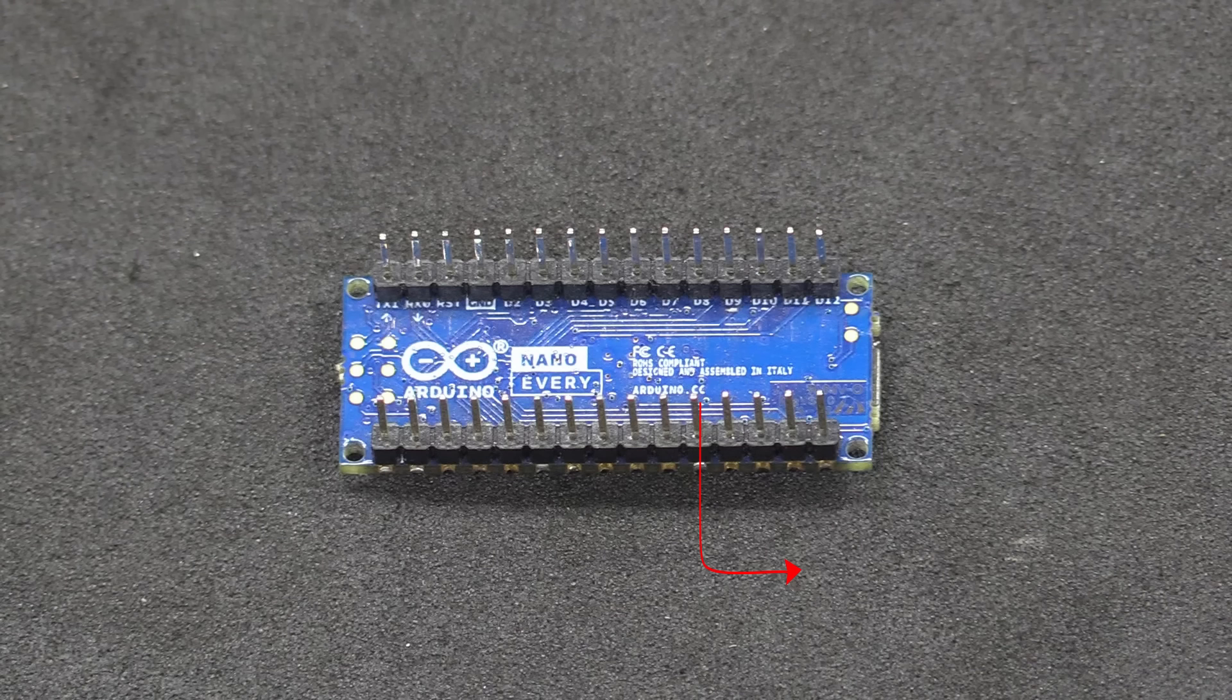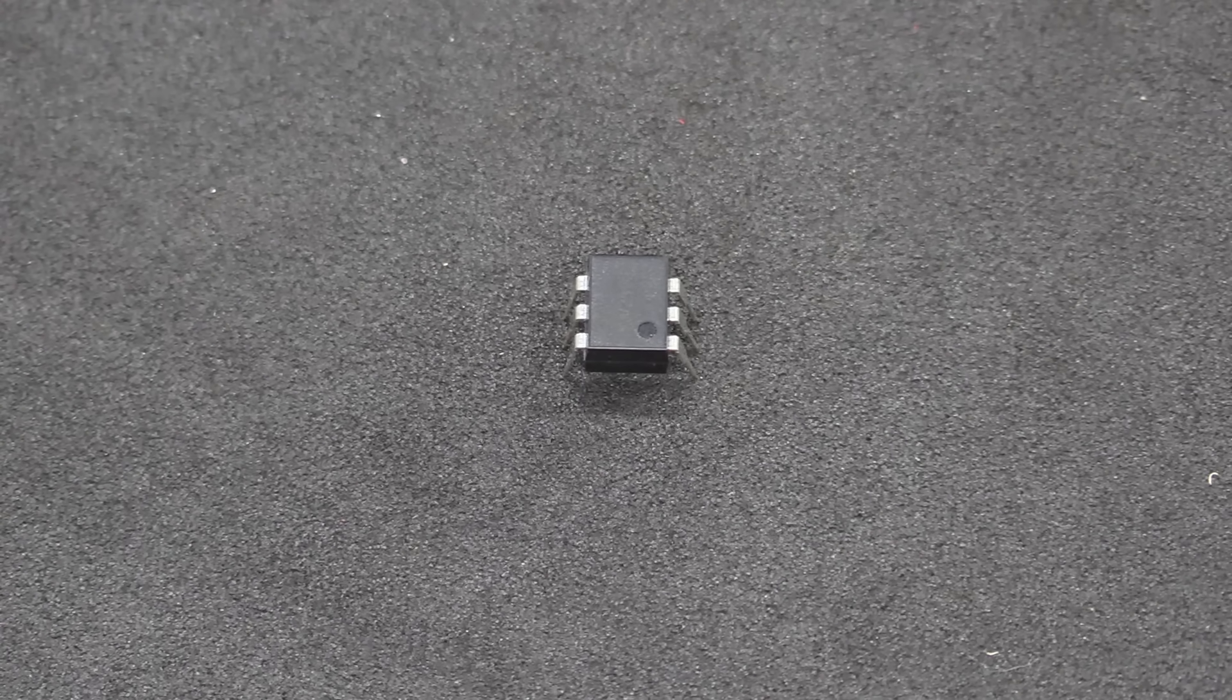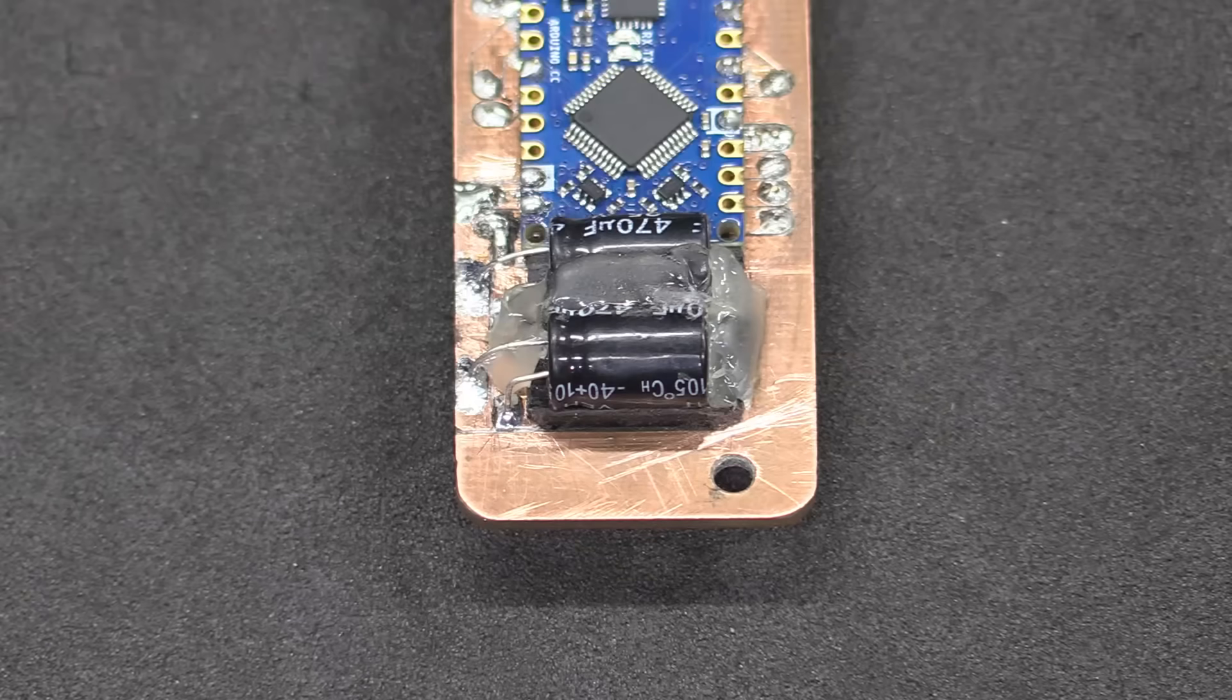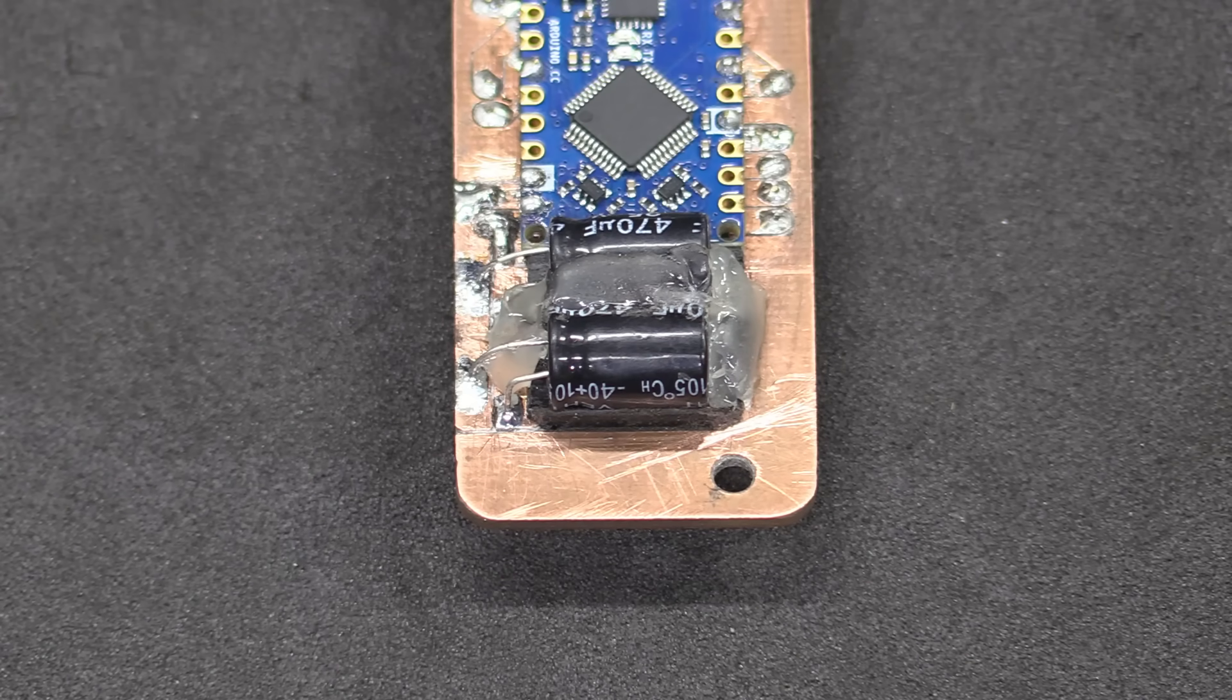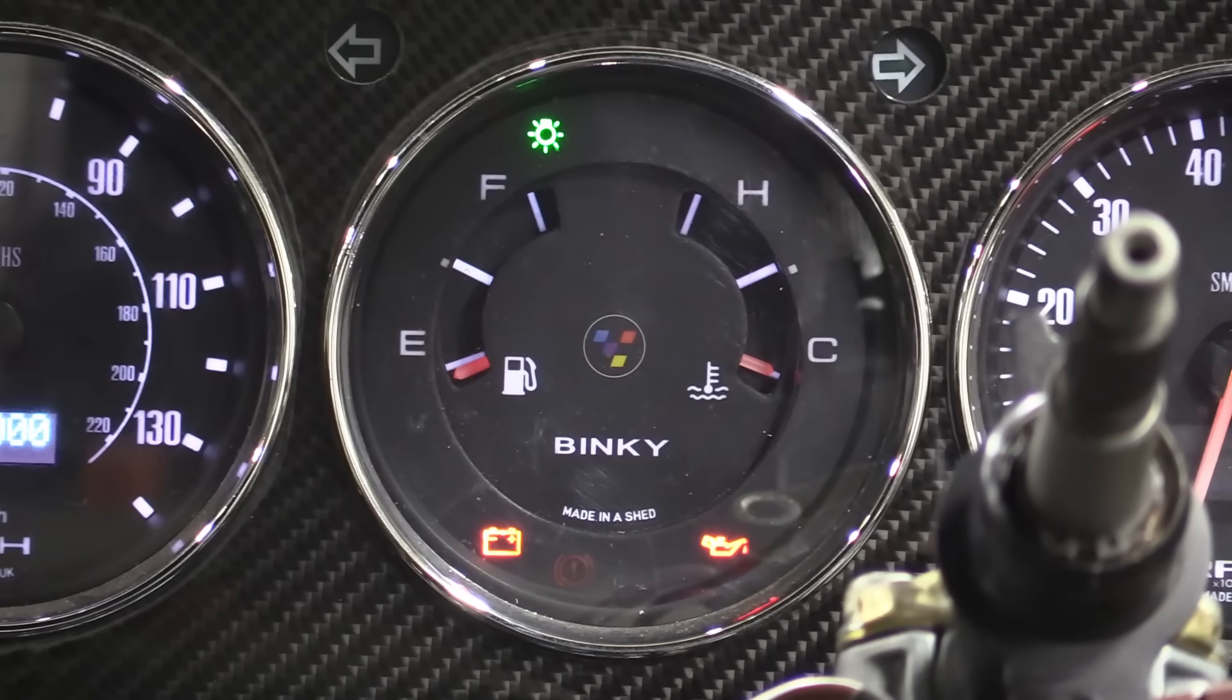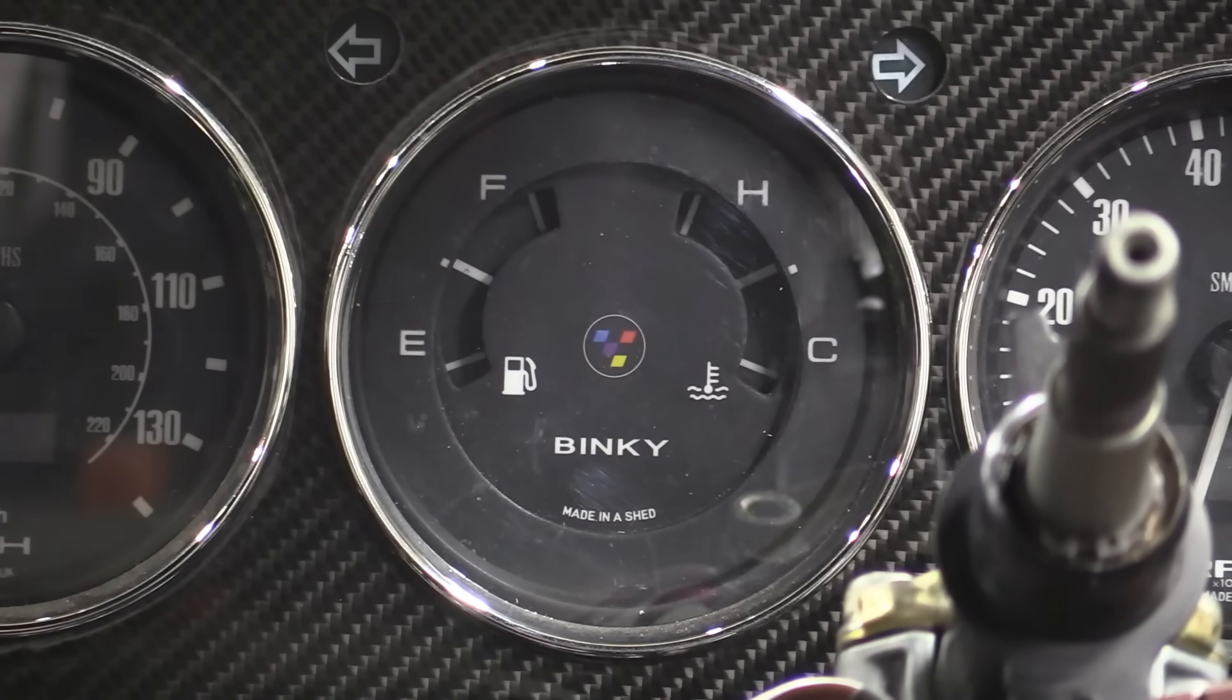This optocoupler is hooked up to the permanent live, and when activated, the Arduino and the servos are powered. There's a moment when the board is unpowered, but a couple of capacitors bridge that tiny gap. The servos park, the two second timer runs out, and the 5V power to the optocoupler stops. This kills the Arduino. Simple, but effective.